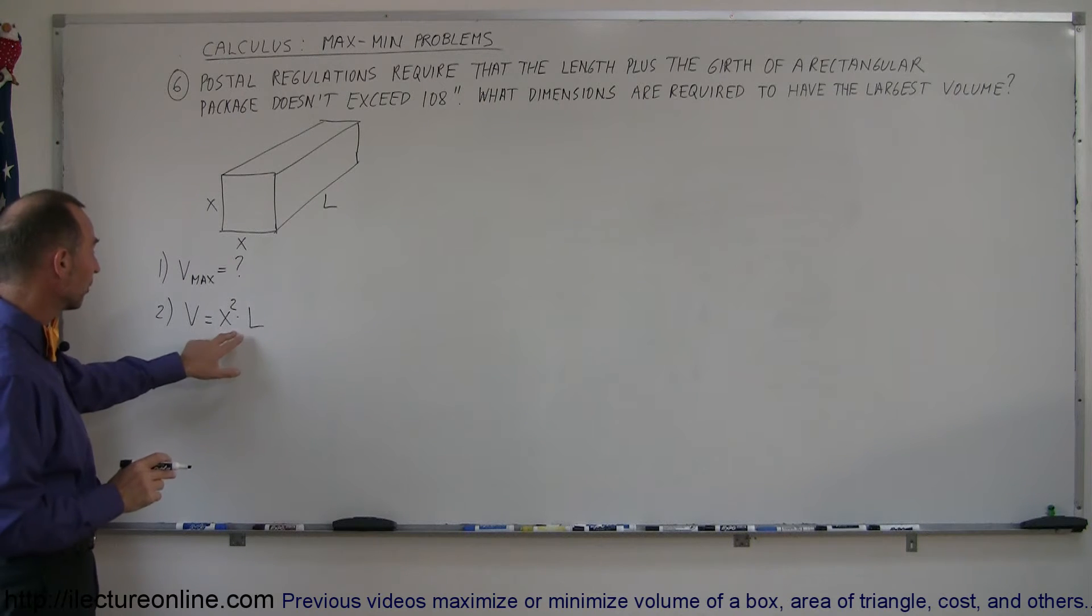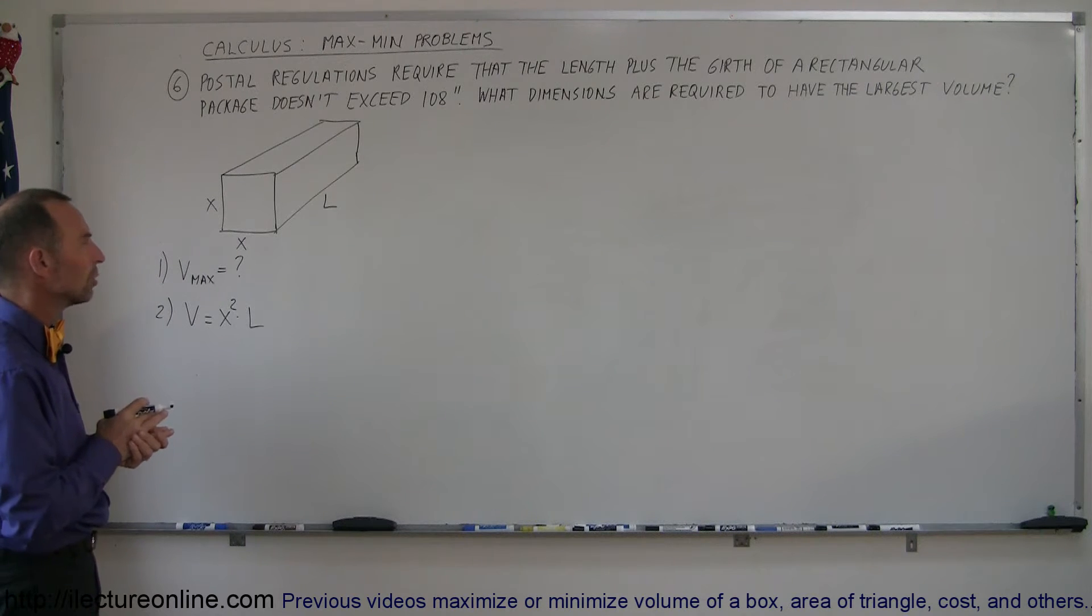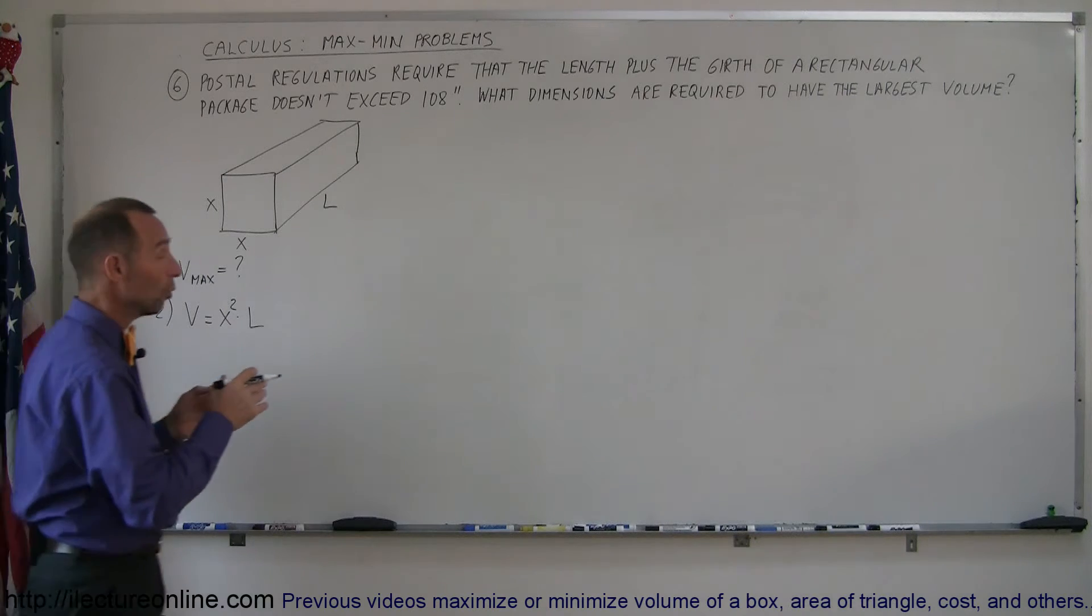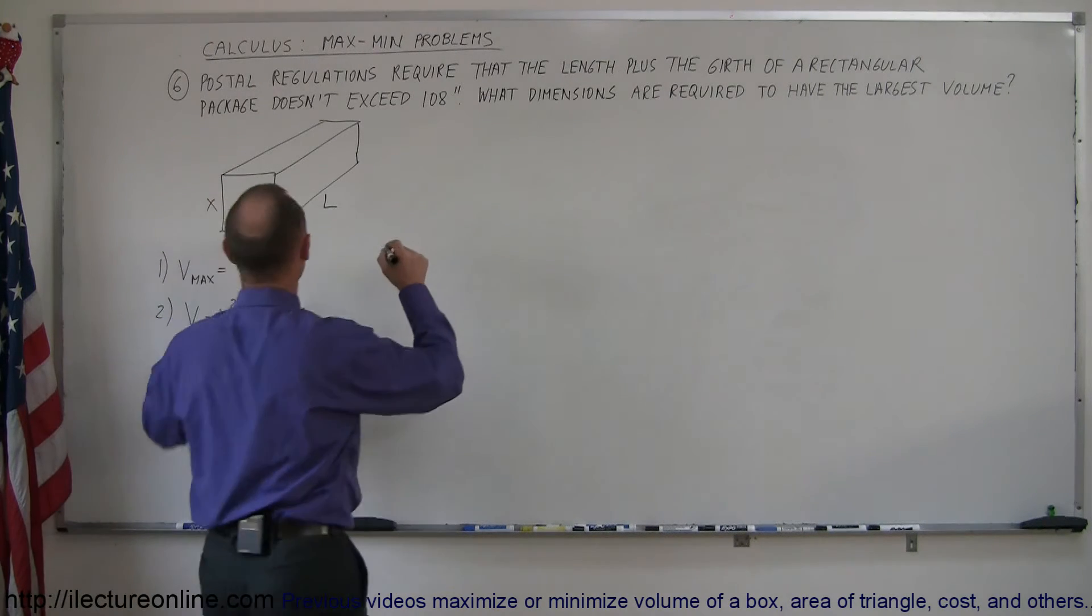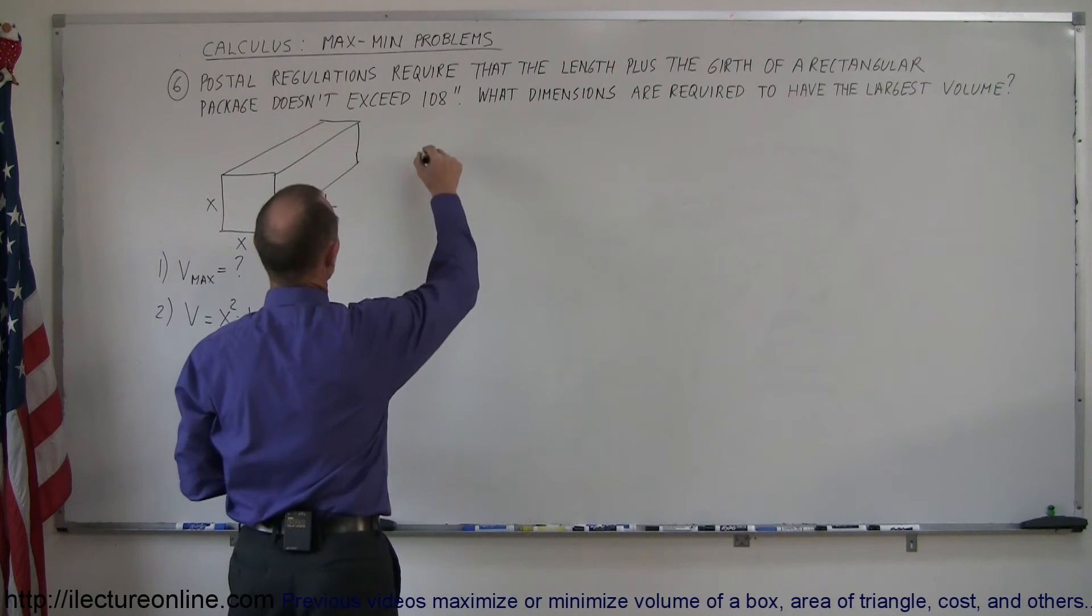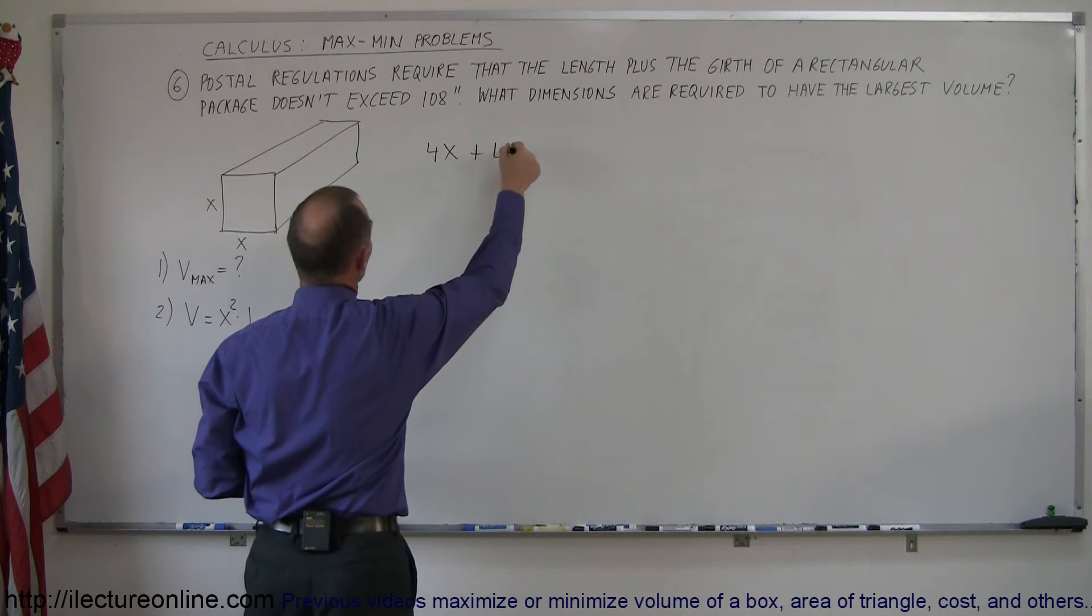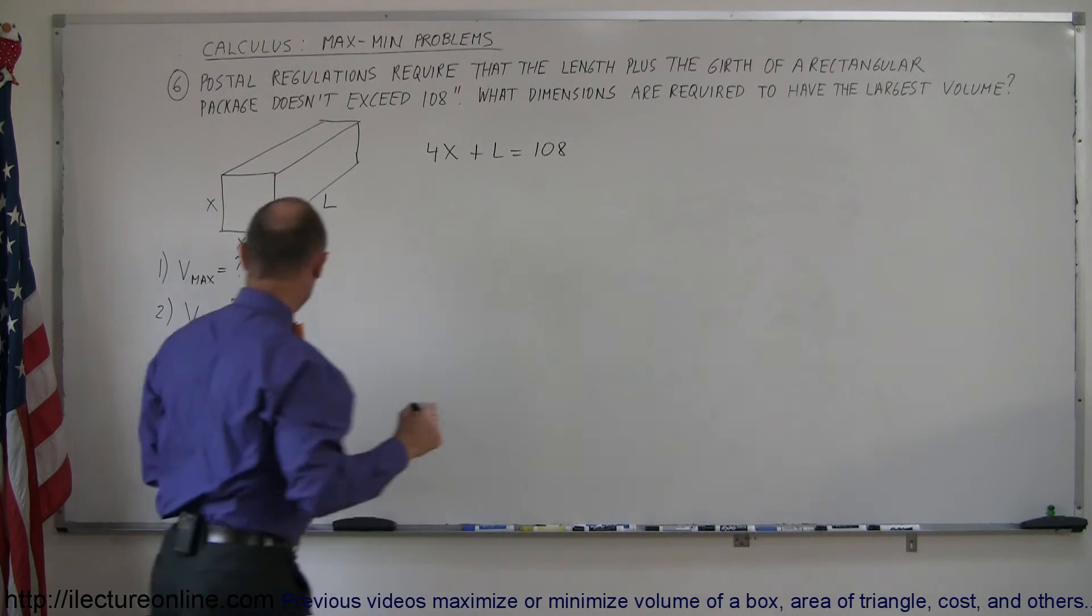But since we have two variables in our equation we should come up with some sort of constrained relationship to get rid of one of the two variables. We know that the girth plus the length cannot exceed 108 inches. So to find the maximum size we're going to take the girth which is the circumference of the package. So 4 times x, that's the girth of the package, plus the length can be no more than 108 inches.